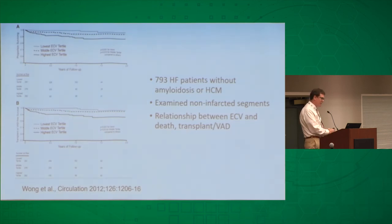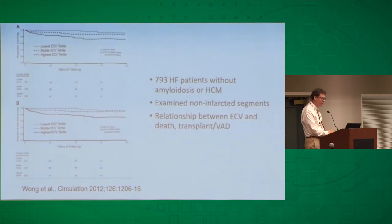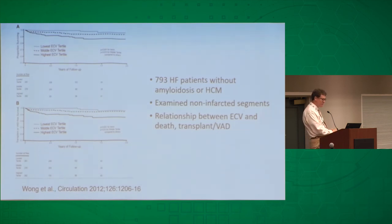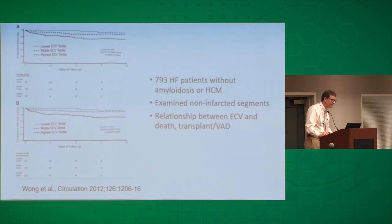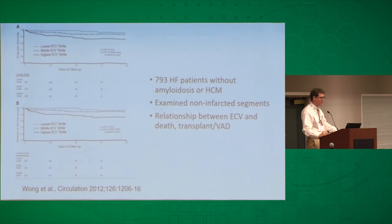Here's an example of how ECV data can be used for prognosis. By measuring extracellular volume fraction in about 800 heart failure patients with low ejection fraction — including hypertrophic and amyloidosis patients but excluding infarcted segments — patients in the highest tertile of extracellular volume fraction were much more likely to progress to transplant or LVAD over approximately two years. This demonstrates that the ECV fraction is a meaningful prognostic marker even in apparently normal-appearing myocardium.